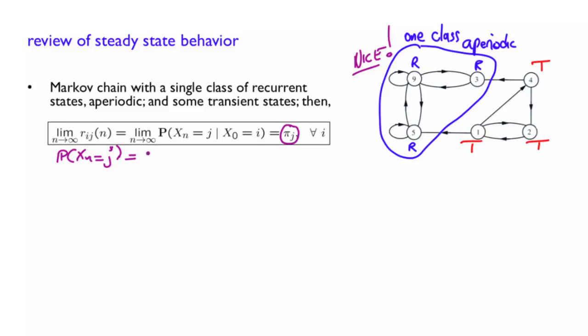Let's see how to do that. So this is the summation of all i. So you condition on that state i. So it's r_ij of n times the initial probability distribution of your choosing. So this is the total probability theorem. Now, in the limit, when n goes to infinity, this goes to π of j, independent of i. So you can take this expression, the limit, and take it out of the summation. And then you have the summation of the probability of x_0 equals i. These are probabilities, so they sum to 1. So in the end, you have that converges to π of j.